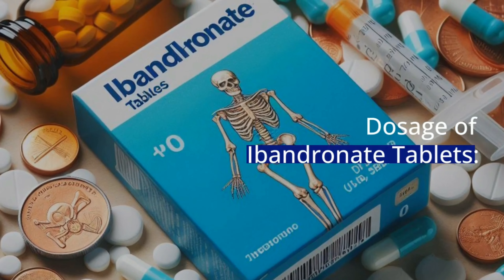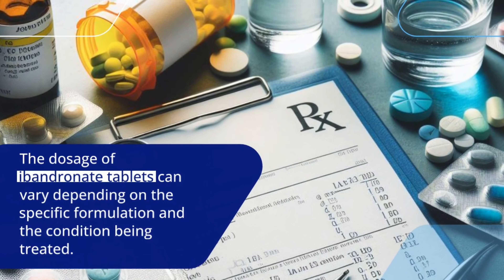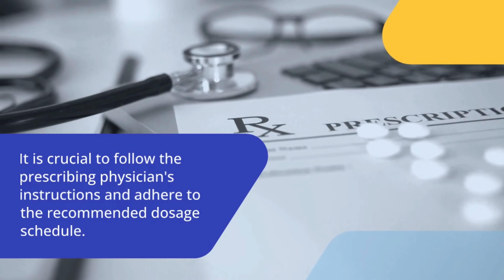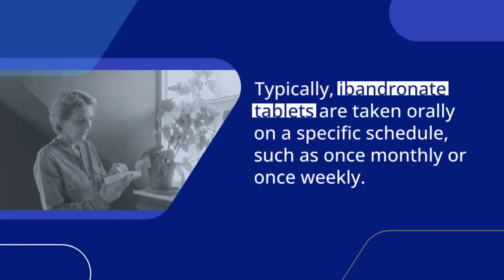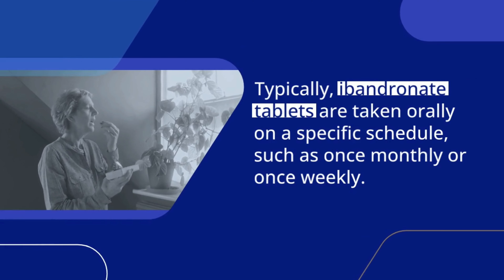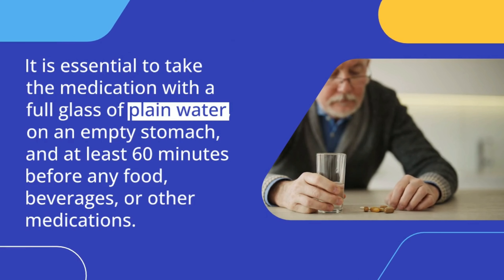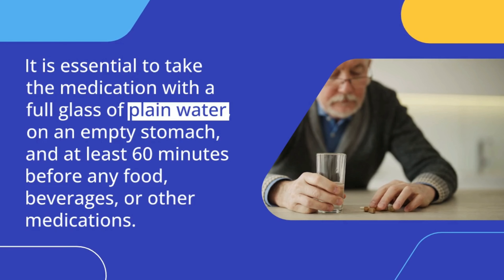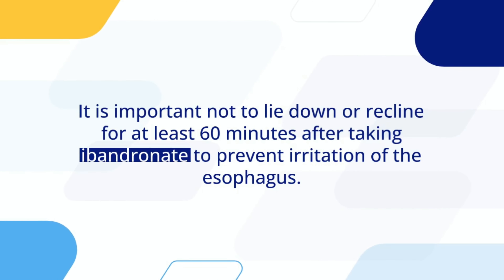Next, discussing the dosage of Ibandronate tablets. The dosage can vary depending on the specific formulation and the condition being treated. It is crucial to follow the prescribing physician's instructions and adhere to the recommended dosage schedule. Typically, Ibandronate tablets are taken orally on a specific schedule, such as once monthly or once weekly. It is essential to take the medication with a full glass of plain water on an empty stomach and at least 60 minutes before any food, beverages, or other medications.